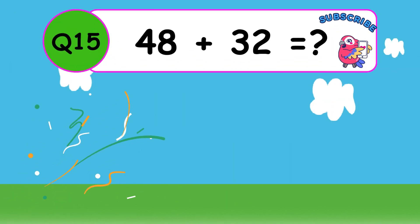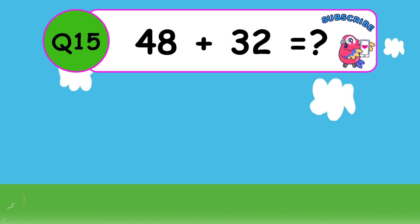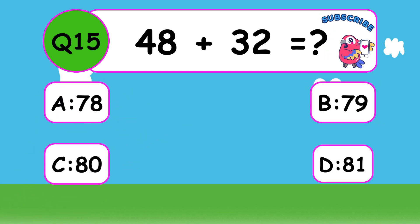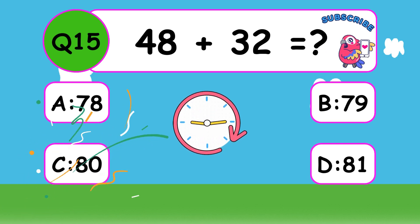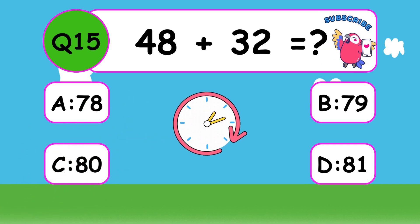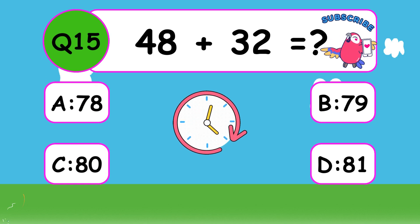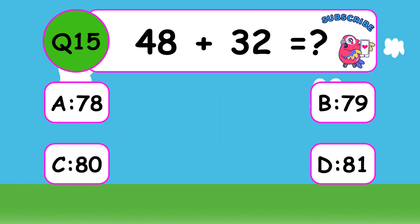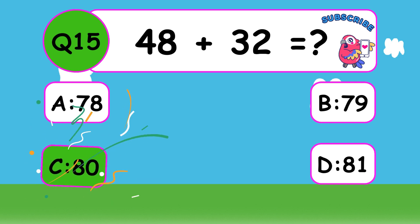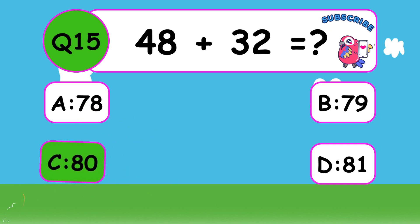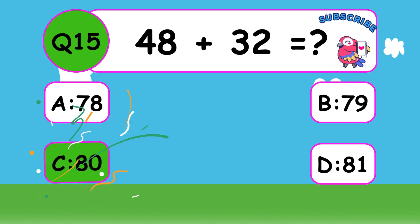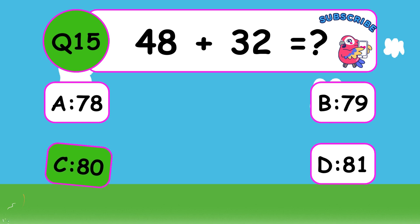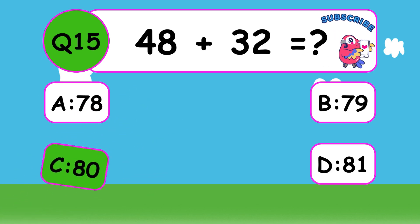What is 48 plus 32? The answer is C, 80. Fantastic, 48 plus 32 equals 80.